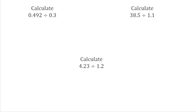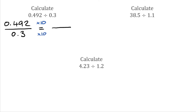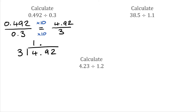For this first one I'm going to rewrite it as a fraction: 0.492 over 0.3. We want an equivalent fraction, so I'm going to multiply the bottom by 10 to get rid of the decimal, which means I've also got to multiply the top by 10. On the bottom 0.3 times 10 is 3, and on the top we'd have 4.92. So we've got to do 4.92 divided by 3. 3s into 4 go 1 time with a remainder of 1. 3s into 19 go 6 times with a remainder of 1. And 3s into 12 go exactly 4 times. So our answer is 1.64.